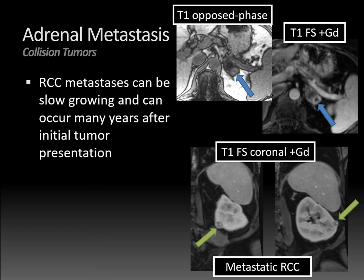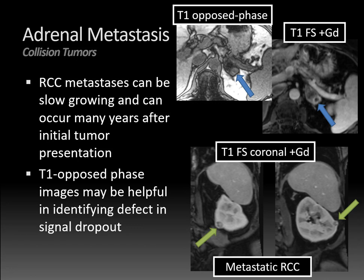Two teaching points from this case: renal cell carcinoma metastases can be extremely slow-growing and can occur many years after the initial tumor presentation — in this case, nine years after the initial MRI. Cases can present as far as 20 years after the initial presentation of renal cell carcinoma. Also, T1 opposed-phase images can be very helpful in identifying collision tumors by revealing a defect in an area of signal dropout — particularly useful on examinations done without intravenous contrast. This same principle applies to identifying lesions within a fatty liver or osseous lesions in the spine, as both will demonstrate signal dropout on opposed-phase images.